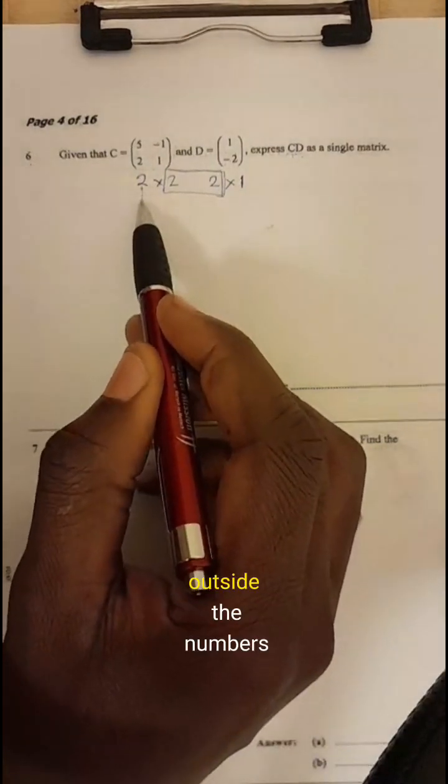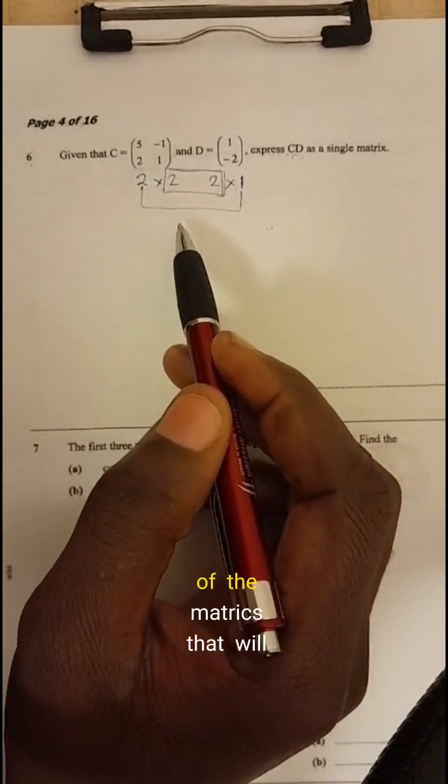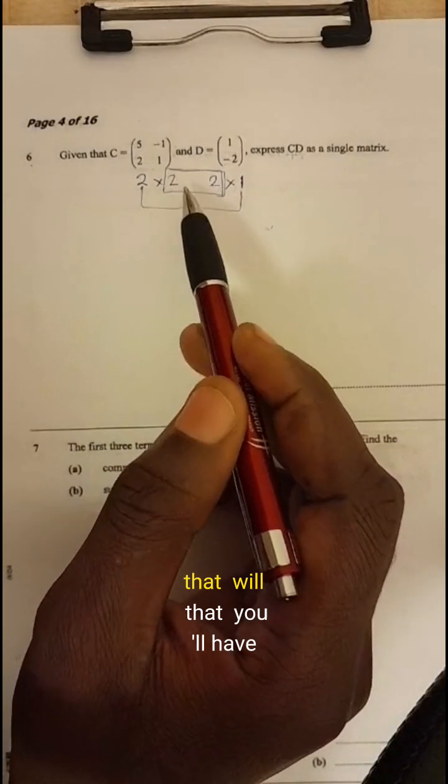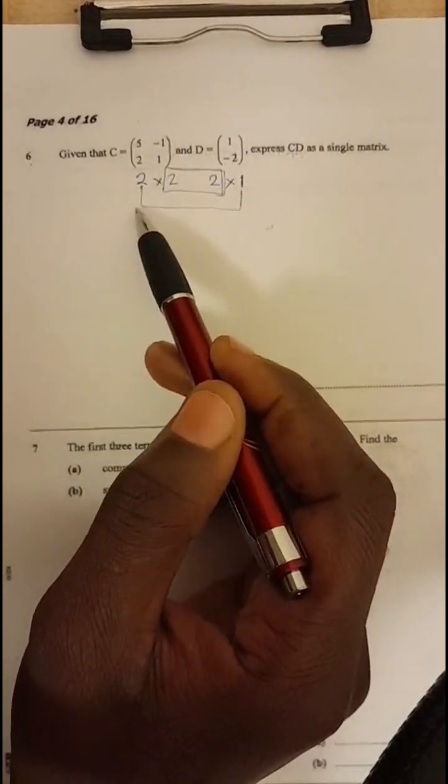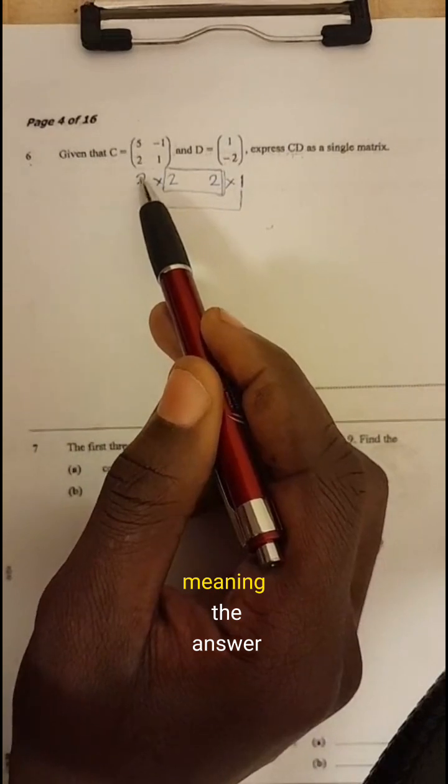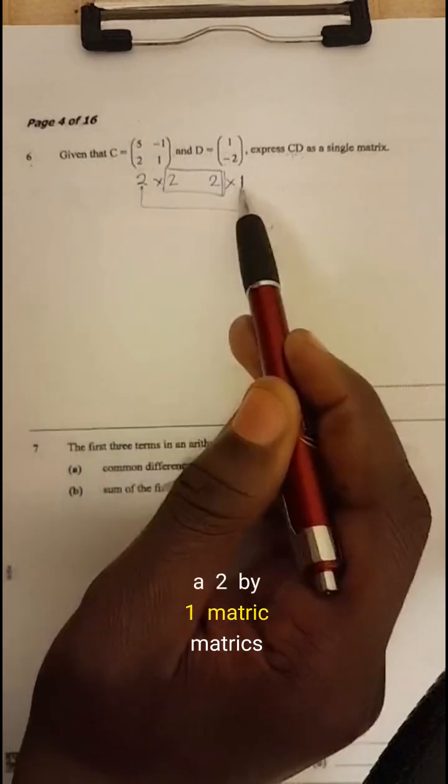Then these outside numbers, they will tell you the order of the matrix that you have after you've done your multiplication. So meaning, the answer, your matrix, your final matrix should be a two by one matrix.